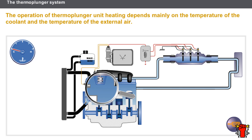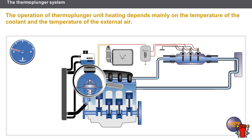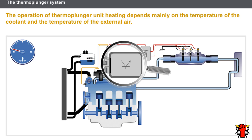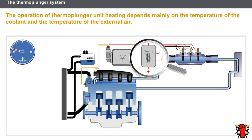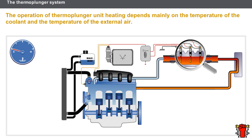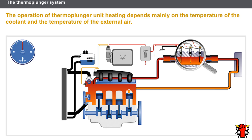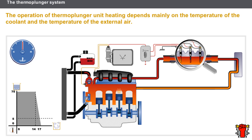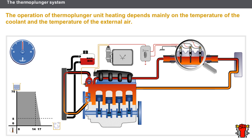The operation of the thermo plunger system depends mainly on the temperature of the coolant and the external air. The engine temperature sensor and air temperature sensor provide the injection computer with information; the injection computer controls the relays. The relays activate several thermo plungers depending on the heating requirement. The thermo plunger system stops automatically when one of the temperature conditions is not fulfilled, and the thermo plungers go out one by one depending on the air-coolant temperature ratio.